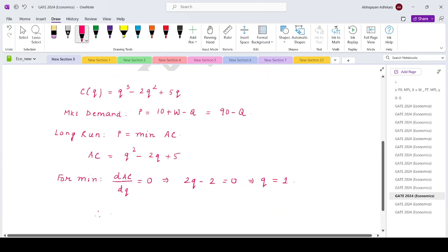Q equals 1. If you replace that in the average cost expression, you get the minimum average cost to be 1 square minus 2 into 1 plus 5. That is 1 minus 2 plus 5, which is 4.